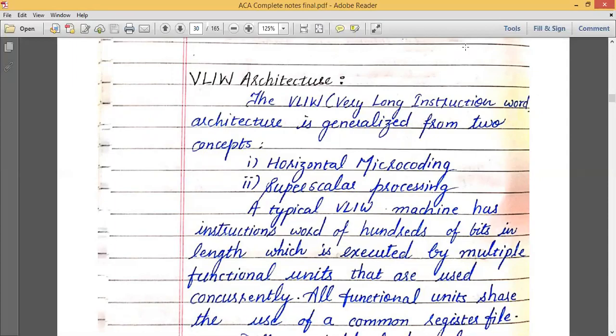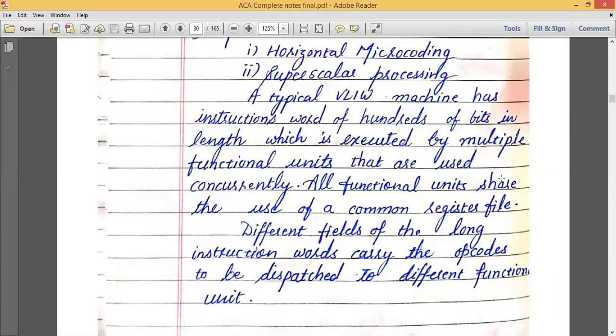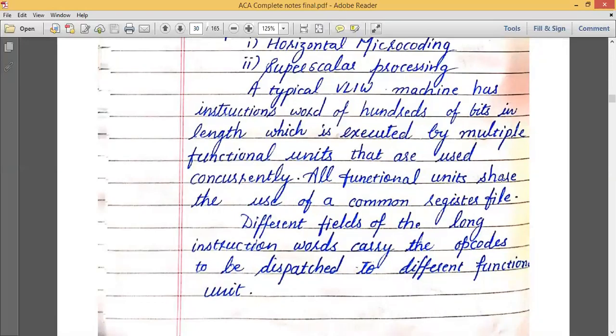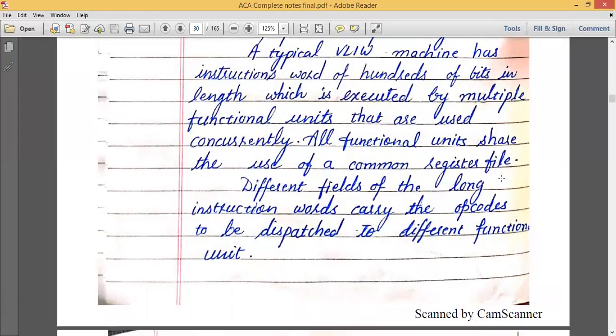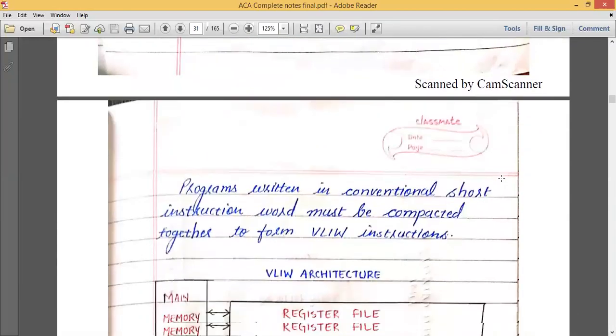Now what actually is a VLIW machine? As its name suggests, it is using an instruction which is hundreds of bits. Its instruction word has hundreds of bits in length which is executed by multiple functional units that are used concurrently. All functional units share the use of common register file and different fields of long instruction words carry the opcodes that dispatch to different functional units.